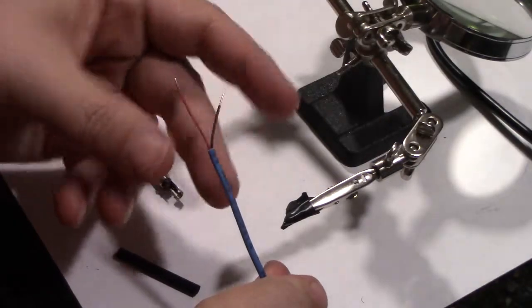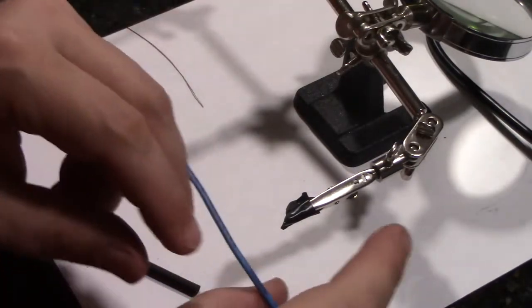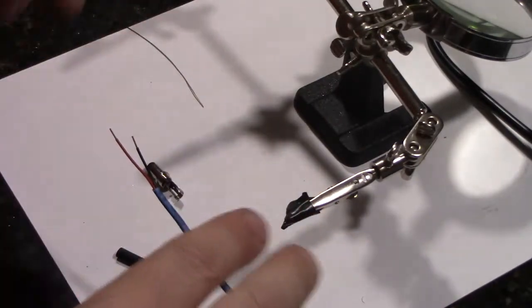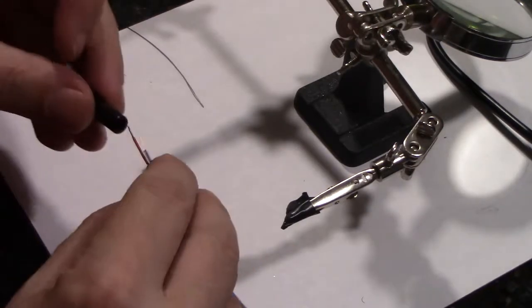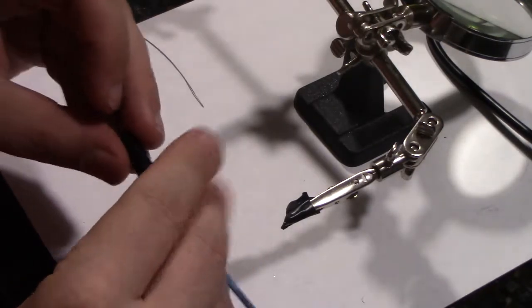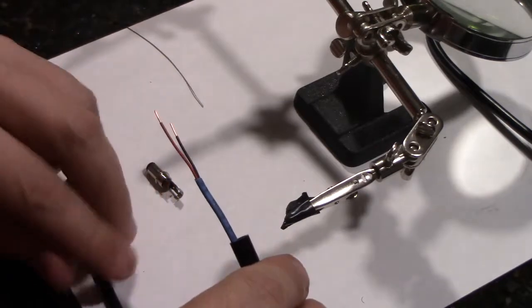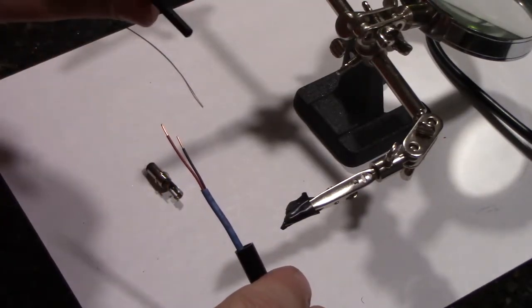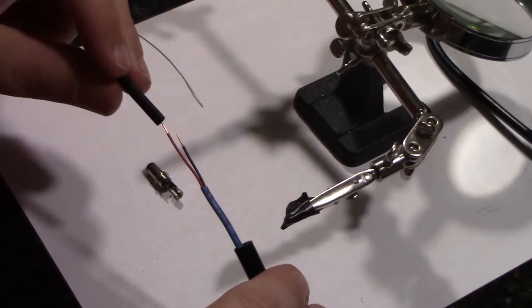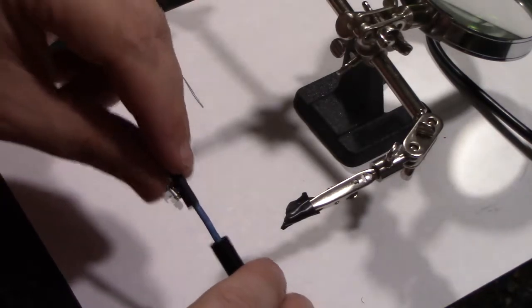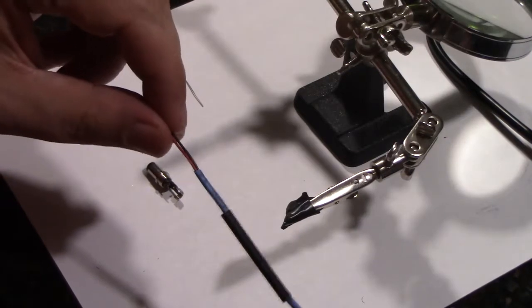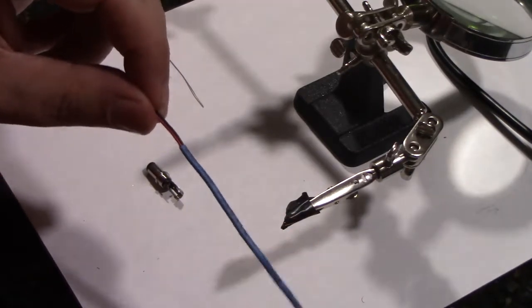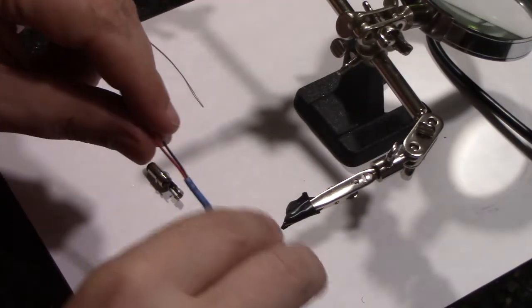Another thing to remember when you're doing this is it's absolutely crucial to slip the cover on over the wire before you start soldering. This is a piece of eighth-inch heat shrink tubing that I'll be using to make it look a little bit prettier and make it a little bit stronger.